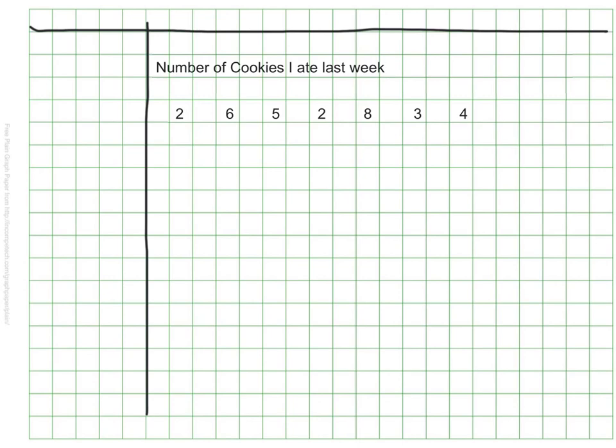In this set the number two appears more often than all the other numbers. I ate two cookies on two different days last week. No other number was repeated. The mode in this data is two.